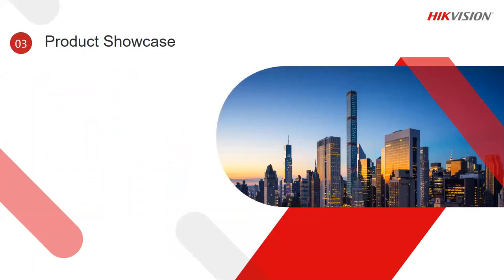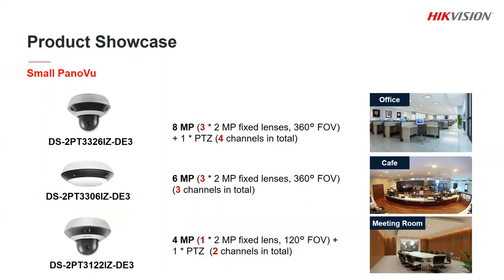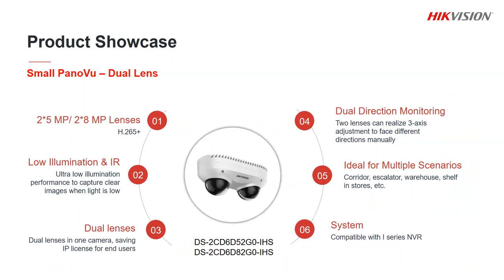Let's have a look at some of the individual products and their features. Here are the small indoor products — these are all designed to be ceiling mounted. The first one has three 2 megapixel lenses around the top giving you full 360 degree coverage and then a 2 megapixel PTZ underneath. The second is essentially the same but without the PTZ, so more cost effective if you don't need that extra detail. The last one is designed to go in the corner of a room — it has one lens on top with a 120 degree field of view and then a PTZ to zoom in for more details. We also have the dual lens camera available with either two 5 megapixel or two 8 megapixel lenses, independently adjustable.